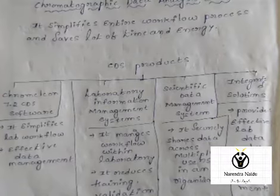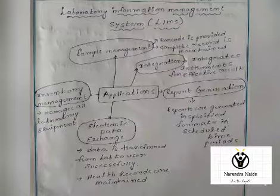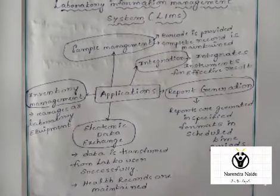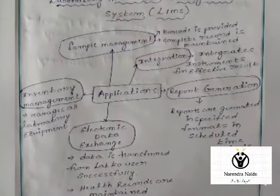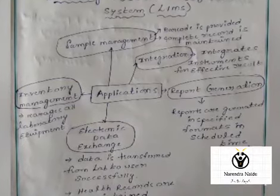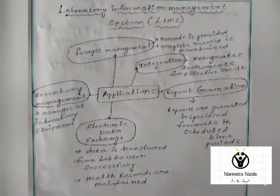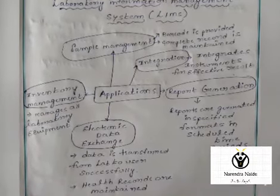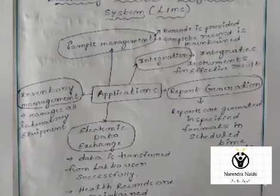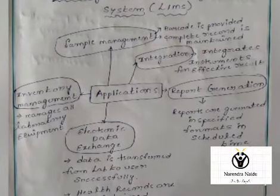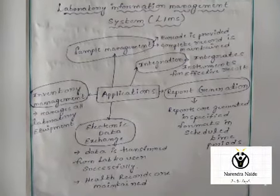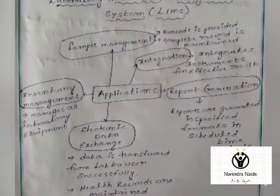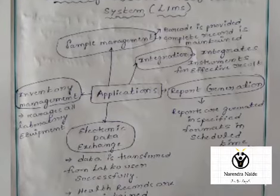The next one is the Integrated Solution, which provides effective lab data by integrating all the instruments. The Laboratory Information Management System's main functions include simple management using barcodes provided for all data items, so they are identified very easily. It integrates all the equipment and generates reports within the scheduled time period.